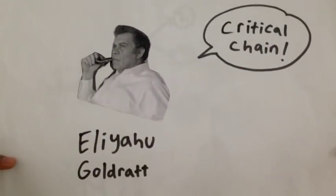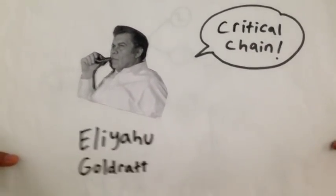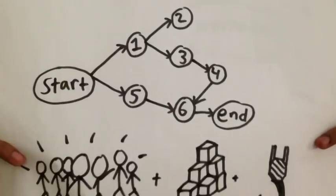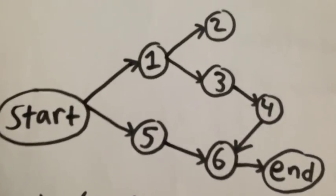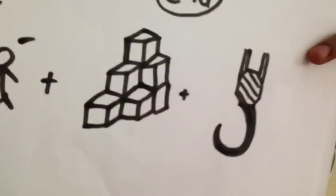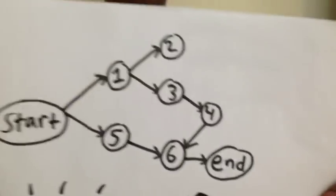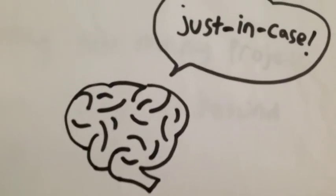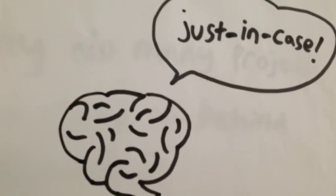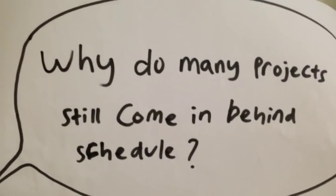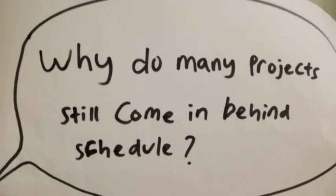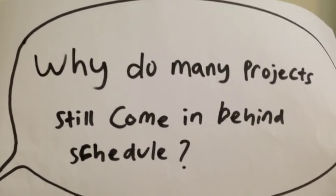Critical chain, first coined by Eliyahu Goldratt. He argued that project network may be constrained by resource and technical dependencies. It's hardwired in the human brain to add just-in-case time when estimating something. With all of this safety time addition, why do many projects still come in behind schedule?